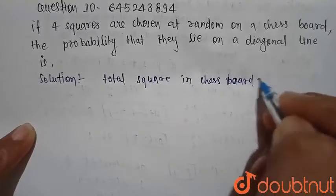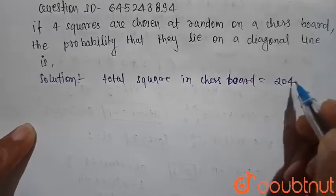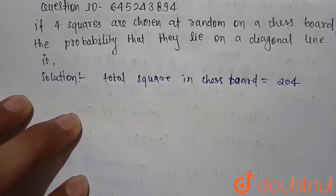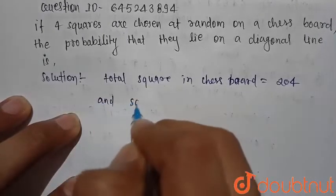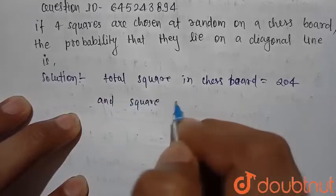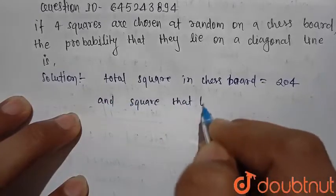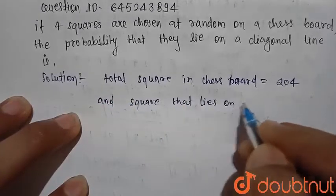Chessboard, this is equal to 204. And square that lies on diagonal line.